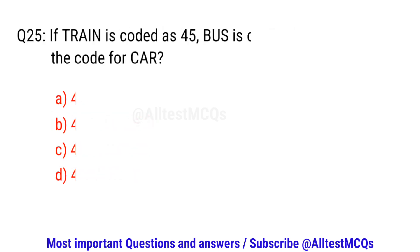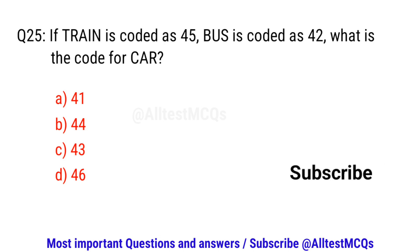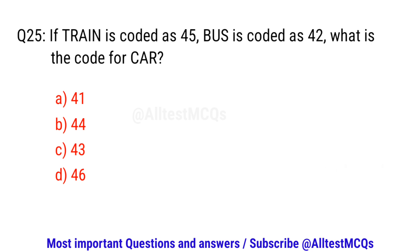Question number twenty-five. If TRAIN is coded as 45 and BUS is coded as 42, what is the code for CAR? The right option is C. 43.